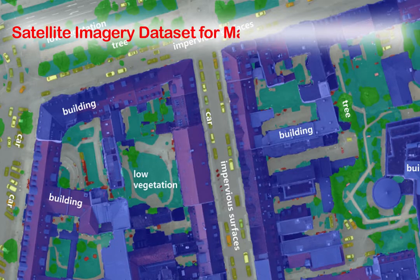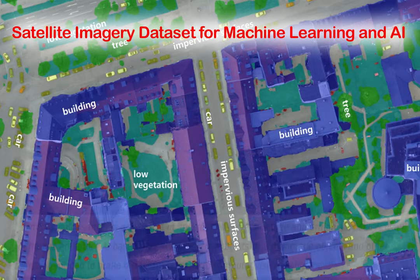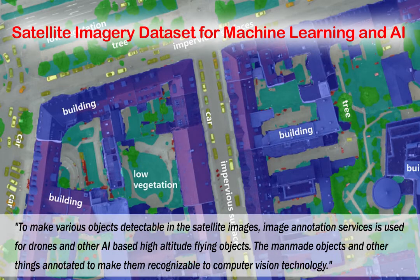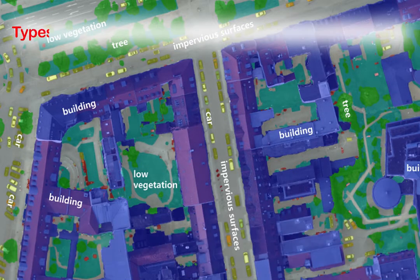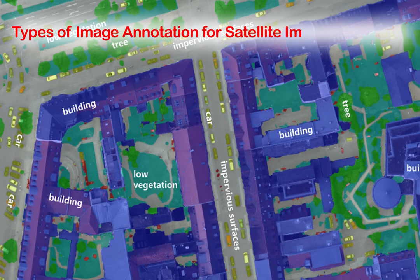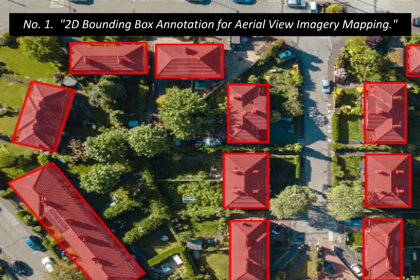Satellite imagery datasets for machine learning and AI are used to make various objects detectable in satellite images. Image annotation services are used for drones and other AI-based high-altitude flying objects, with man-made objects and other things annotated to make them recognizable to computer vision technology. Types of image annotation for satellite imagery datasets include 2D bounding box annotation.